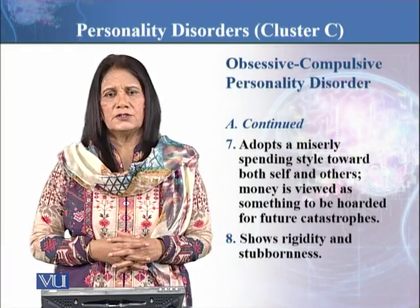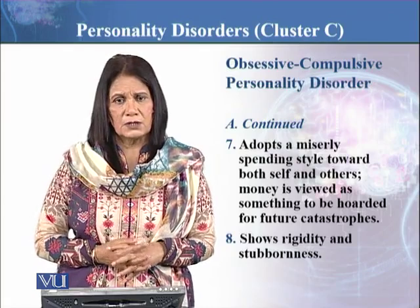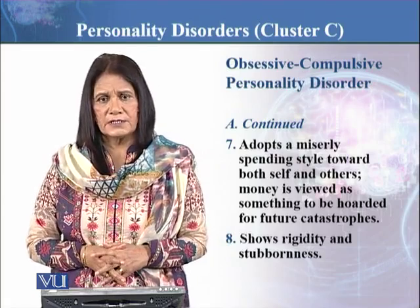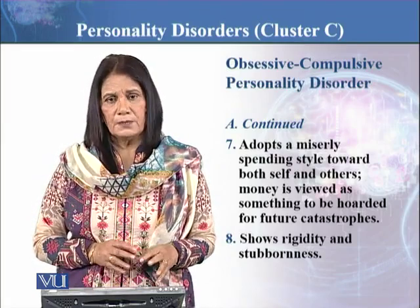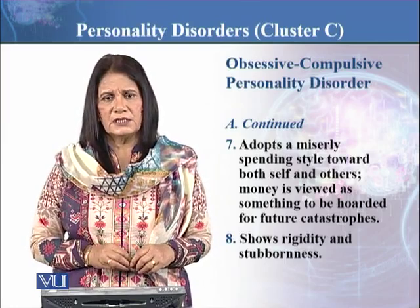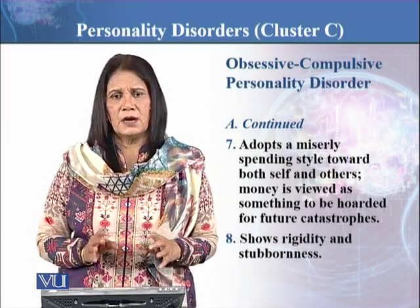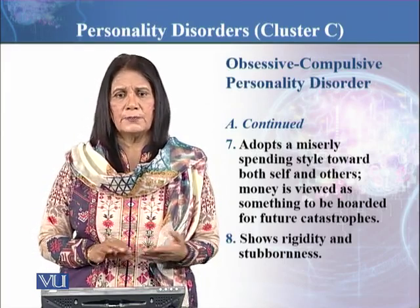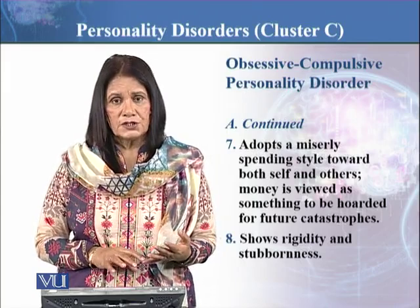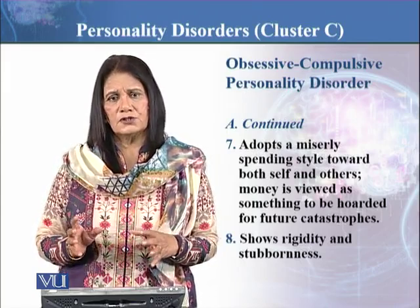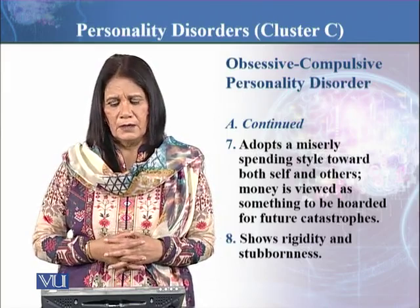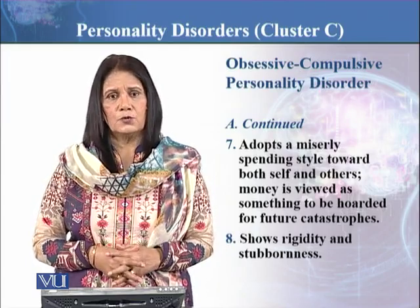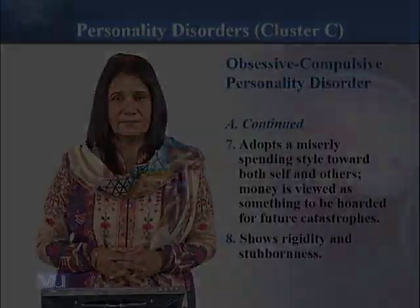Eighth: rigidity and stubbornness — یعنی ضدی بہت ہوتے ہیں، لچکدار نہیں ہوتے۔ So these are the features of Obsessive-Compulsive Personality Disorder، اور mainly perfectionism ہے — چیزیں اپنی طرح سے کرنی ہیں، جس کی وجہ سے time بہت زیادہ لگتا ہے، deadlines meet نہیں ہوتیں، دوسروں کے لیے inflexible ہوتے ہیں، rigidity بہت زیادہ ہے، اور moral rules اور schedules پر بہت زیادہ focus ہوتا ہے۔ That's it with Cluster C personality disorders and particularly OCPD.